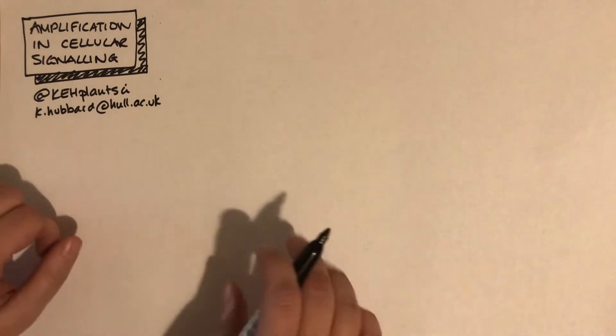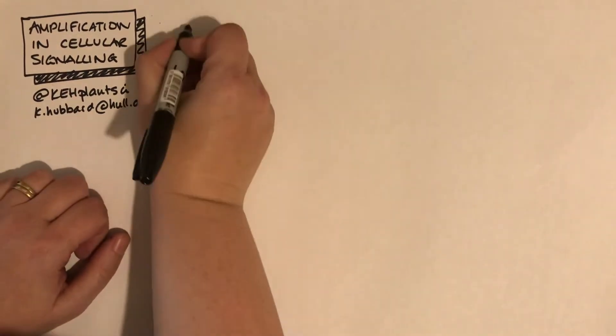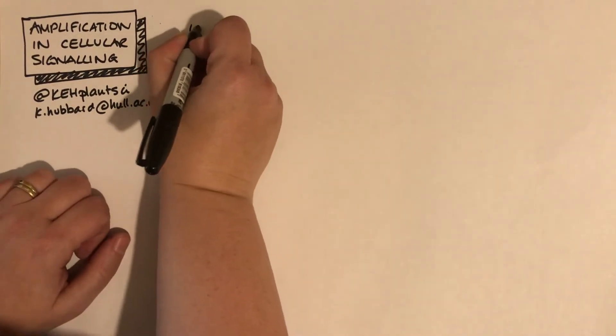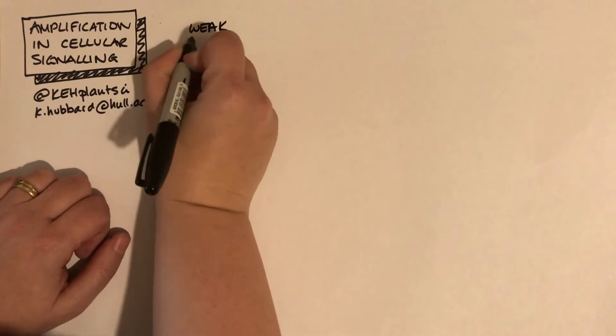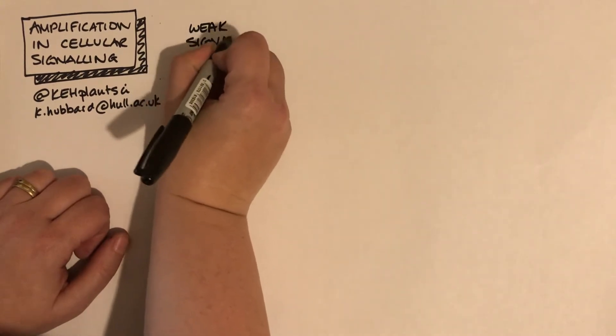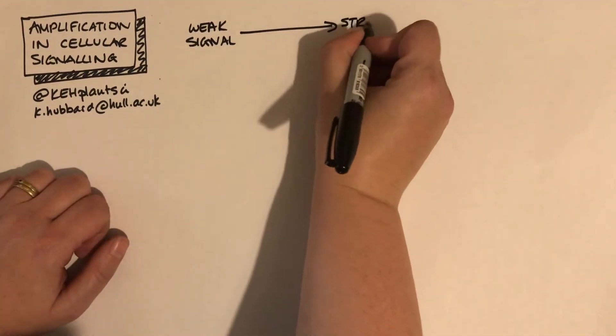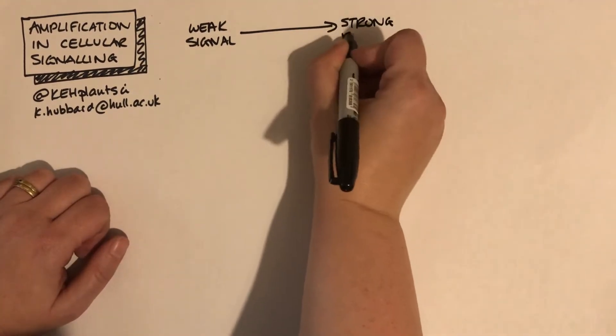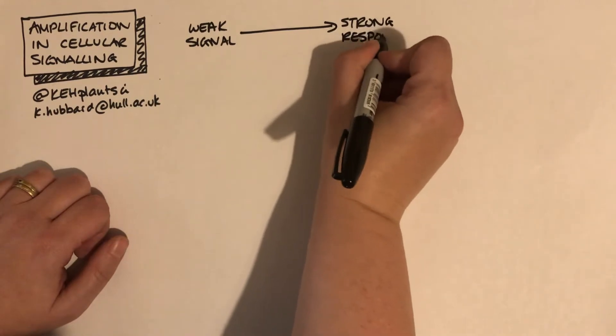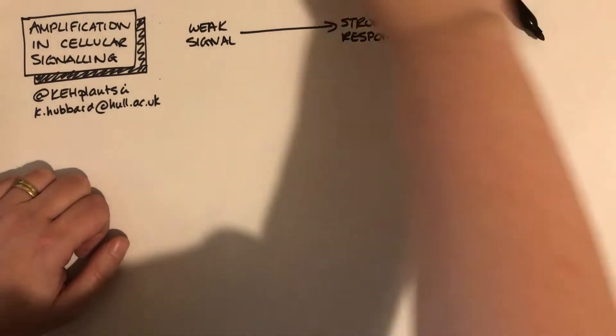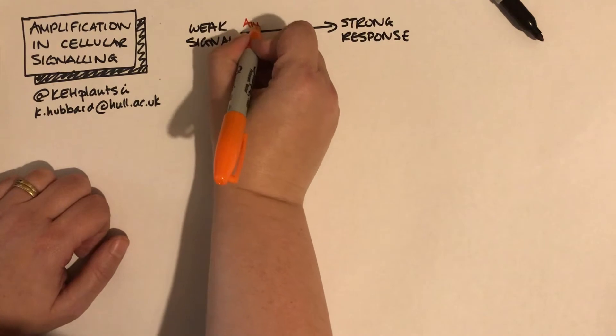This video is going to discuss a really important concept when thinking about cellular signaling and signal transduction pathways, and that is the process of amplification. Amplification is where we go from a relatively weak initial signal through a variety of different processes to get a strong response.